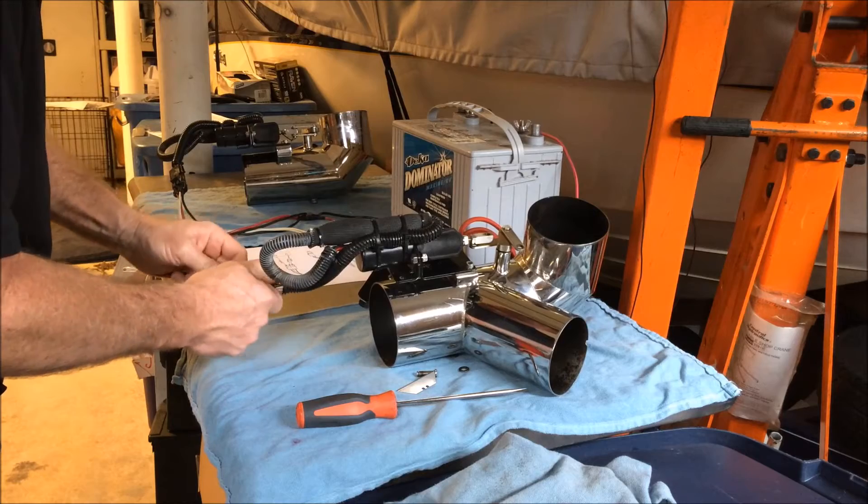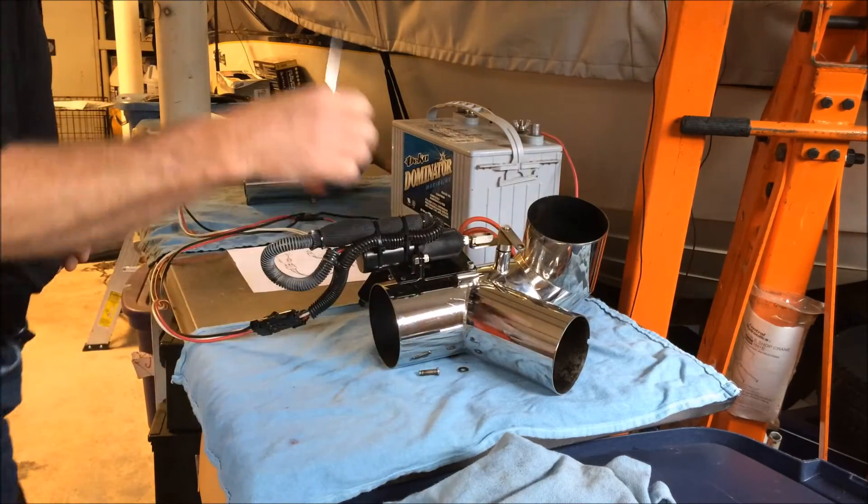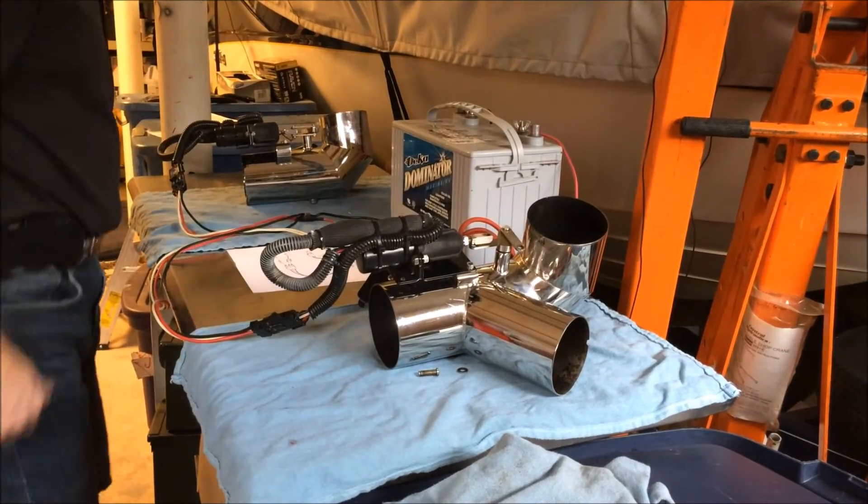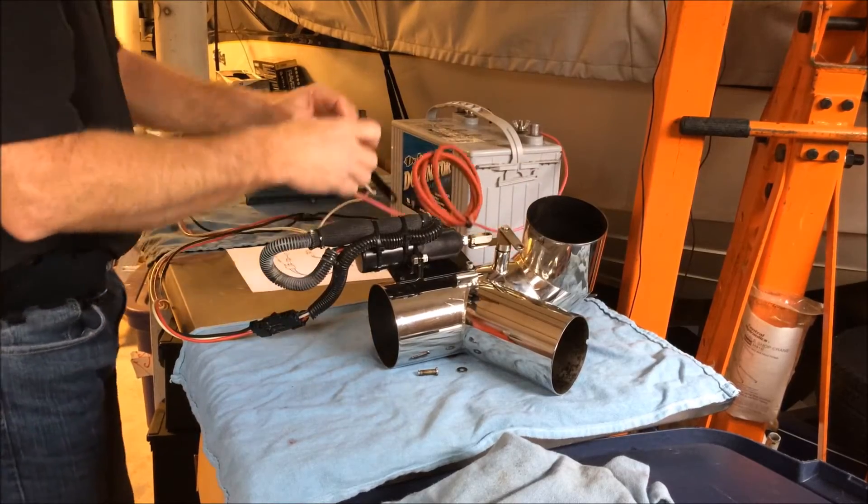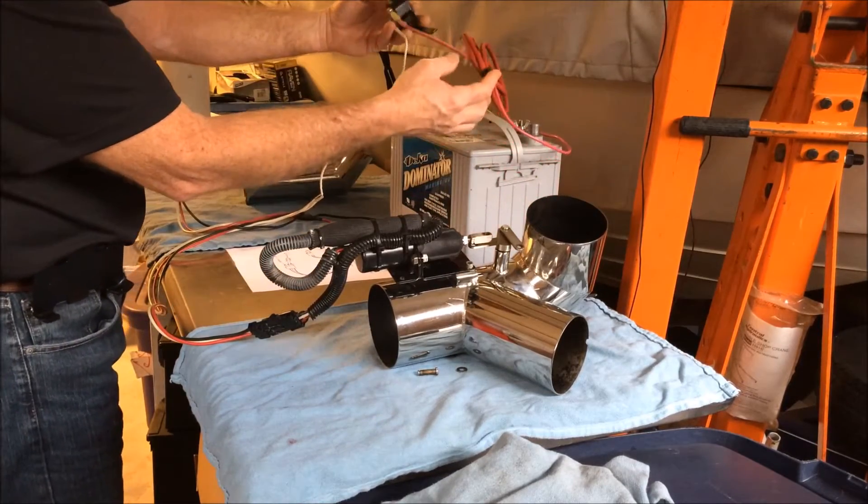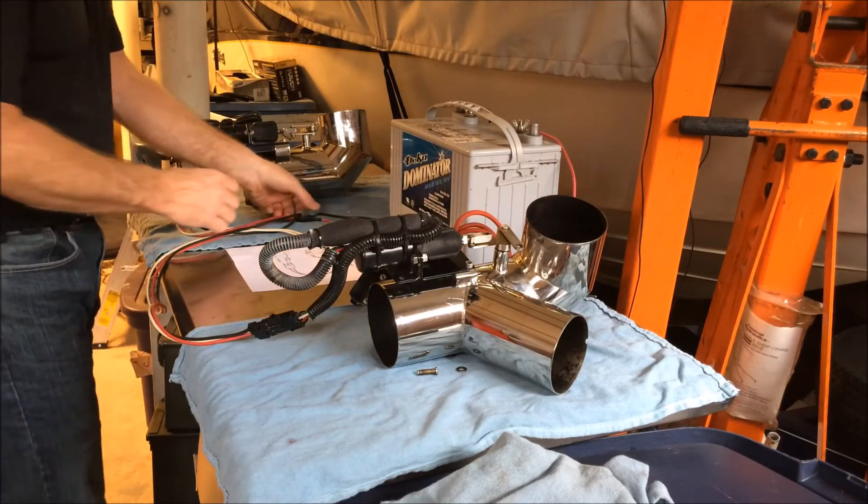So I decided to pull the harness out and the diverters are out. I'm going to replace the O-rings on the diverter valves. And so now I want to test the harness and each one of the solenoids. So hooking up the main power wire through the circuit breaker to the positive and then wire on the ground.